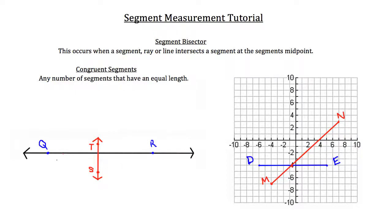Here's another diagram showing line QR being bisected by line ST. If segment QR has a measurement of 10 inches and the midpoint occurs right where ST bisects it, we can label that midpoint P. Then segment QP has a length of 5 inches and segment PR also has a length of 5 inches, because point P is at the midpoint and segment ST is cutting segment QR into two congruent halves.